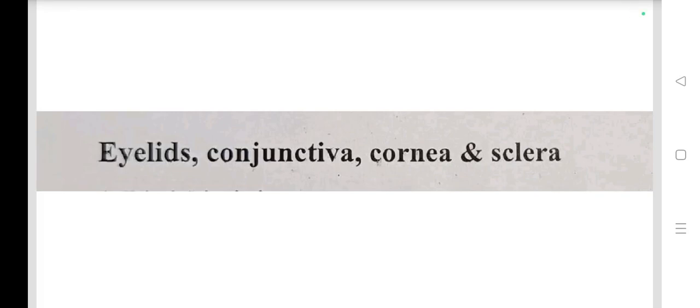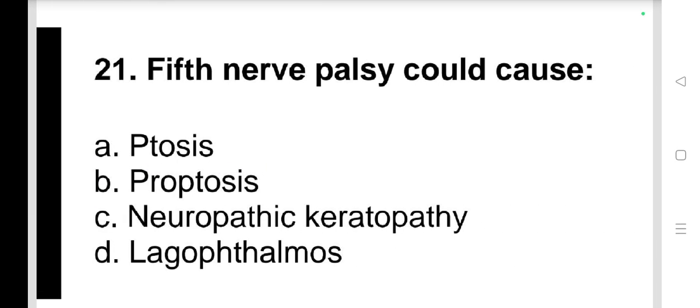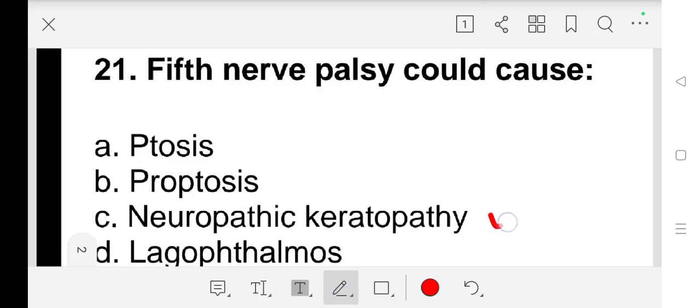Hello guys, our today's topic is eyelid, conjunctiva, cornea, and sclera. Question number 21: fifth nerve palsy could cause a) ptosis, b) proptosis, c) neuropathic keratopathy, d) lagophthalmos. Our answer is c) neuropathic keratopathy.